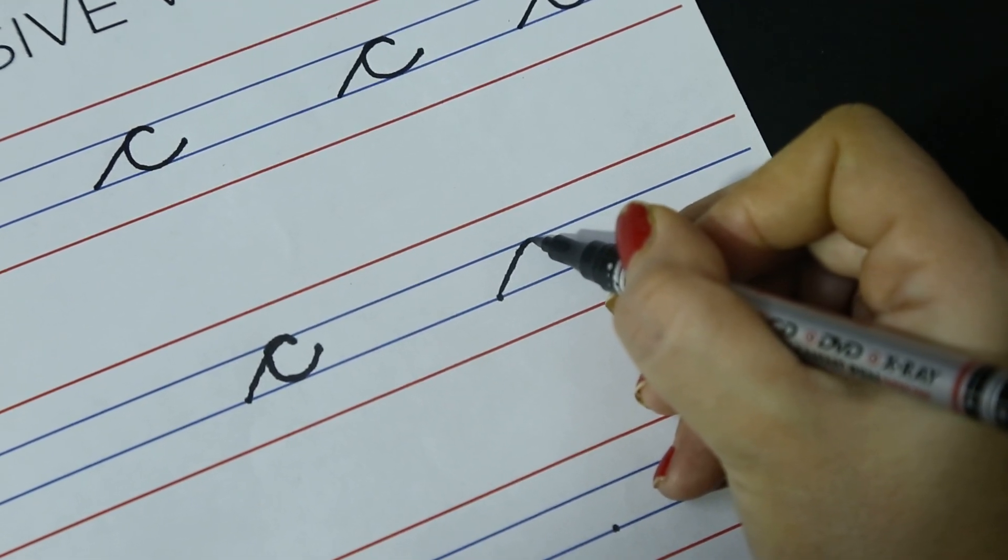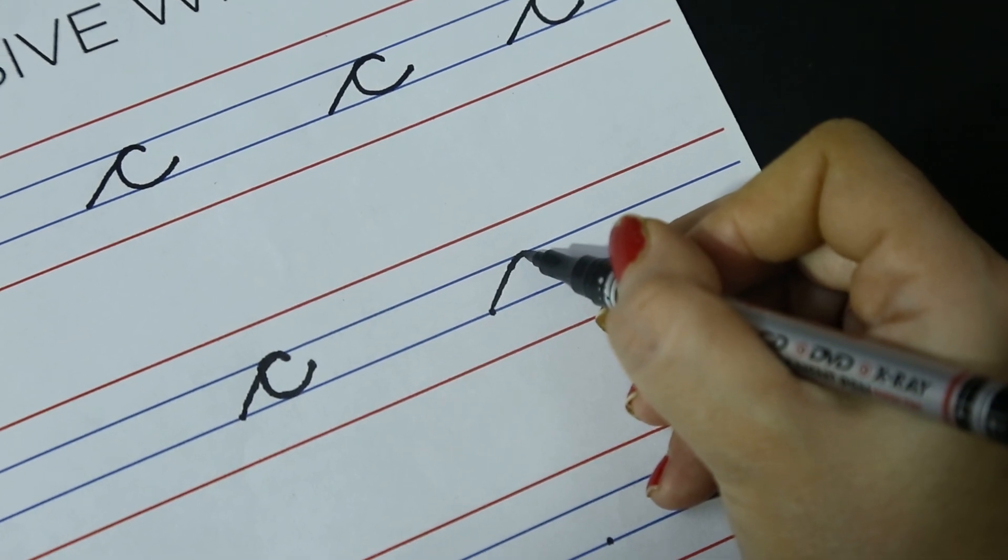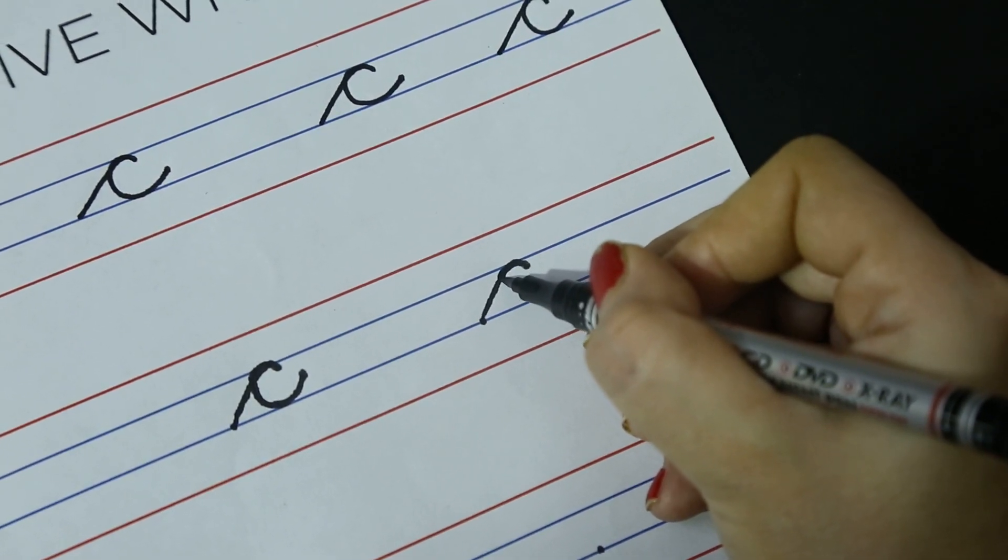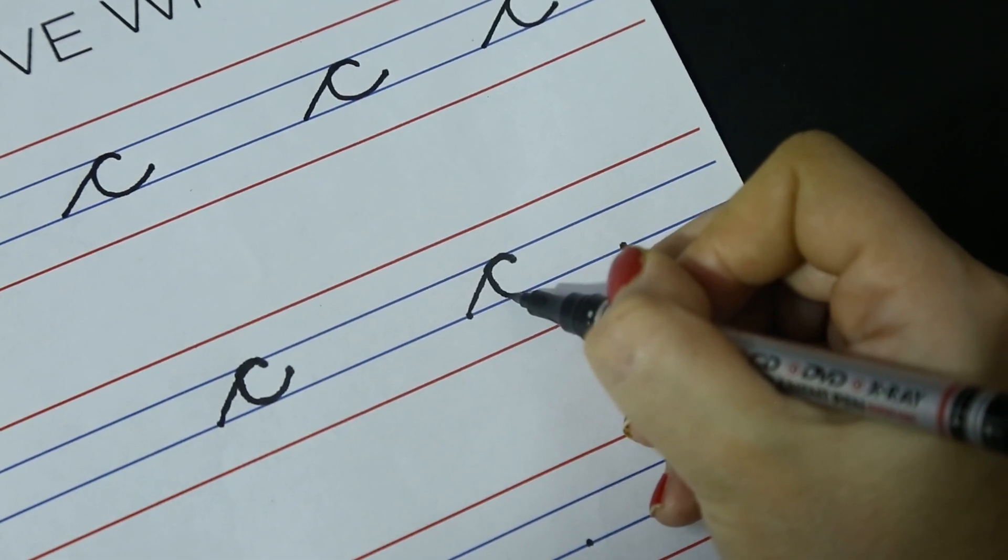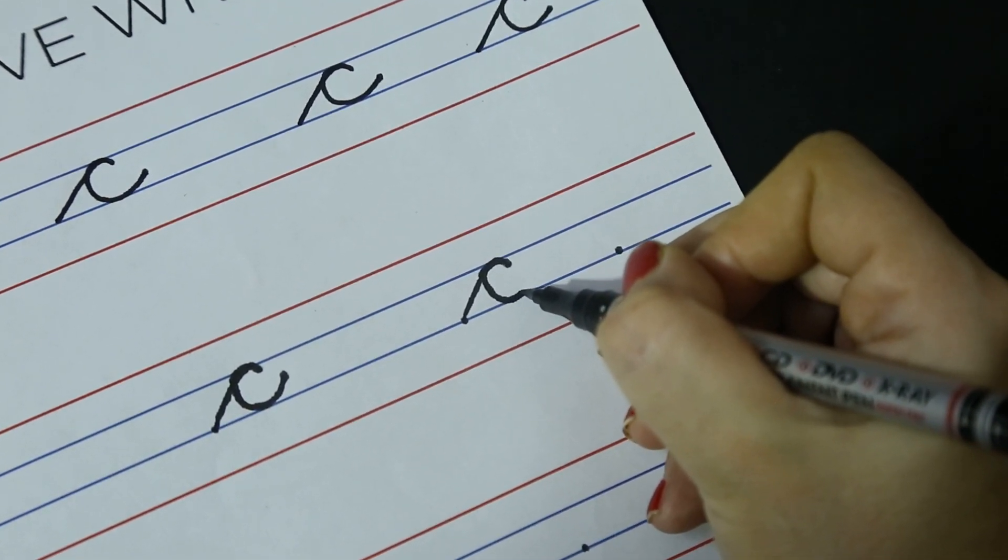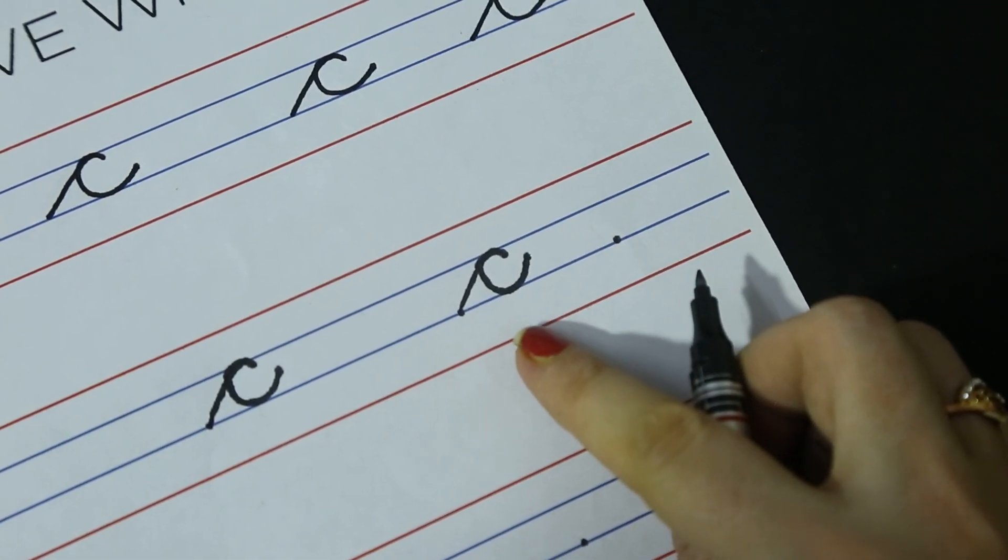Make a little curve. Without lifting the pencil, go back, come back to the third blue line and slightly up. This is cursive letter C.